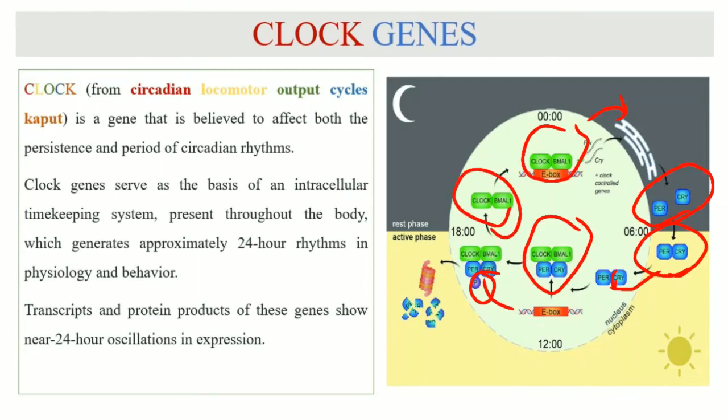This degradation will set the CLOCK and BMAL1 complex free in the nucleus and it will then bind with the E-box again and the cycle will start anew. This basically acts as a feedback system in which the buildup of certain clock proteins in the cytoplasm will result in the suppression of the activity of the transcription factors.